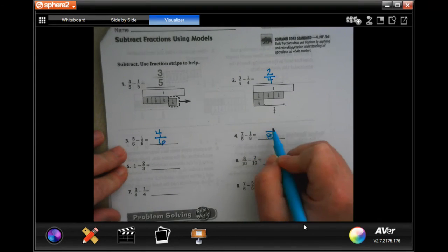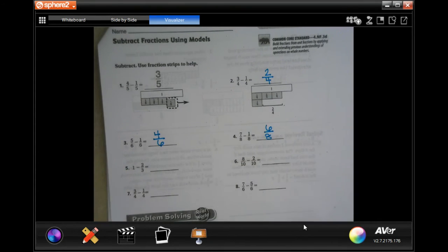I'll do number 4 for you. Denominator stays the same. 7 minus 1 is 6. You guys do 5 through 8.